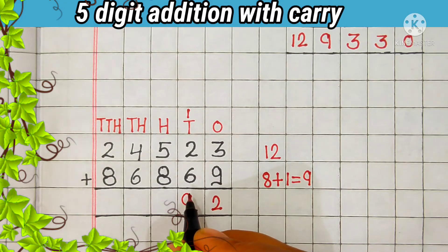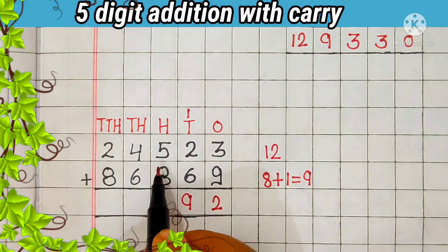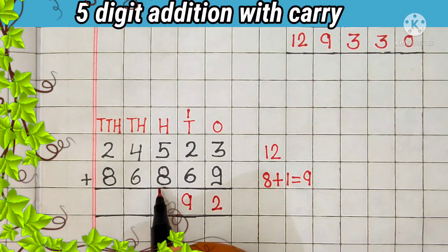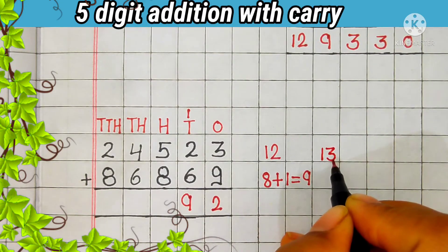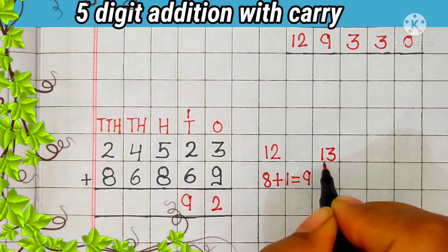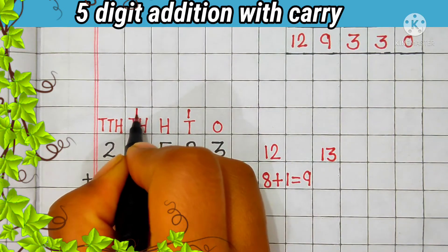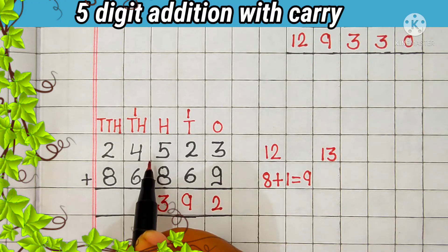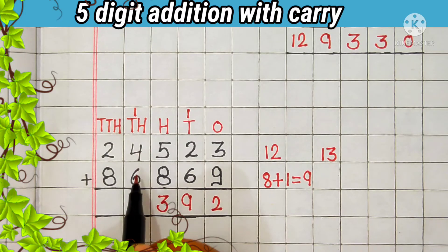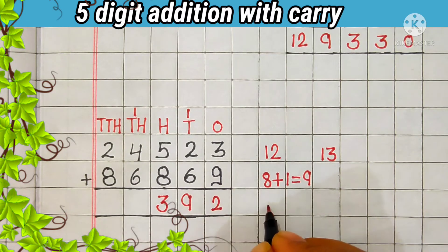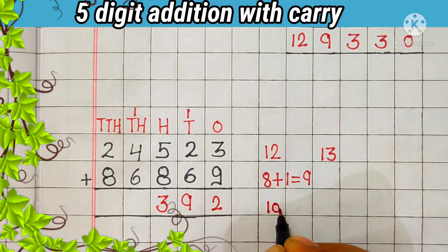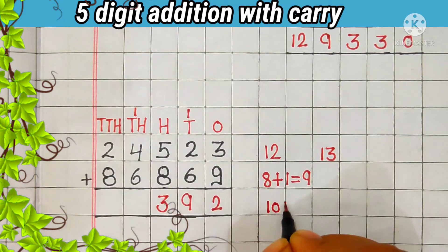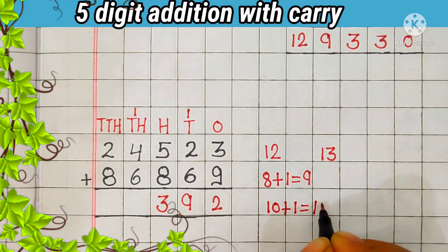Now add the digit at the 100s place. 5 plus 8 is equal to 13. 13 is a 2-digit number. Now we will carry 1 to the 1,000s place, and 3 comes in the answer. Then let's add the digit at the 1,000s place. 4 plus 6 is equal to 10; 10 plus 1 carry is equal to 11.